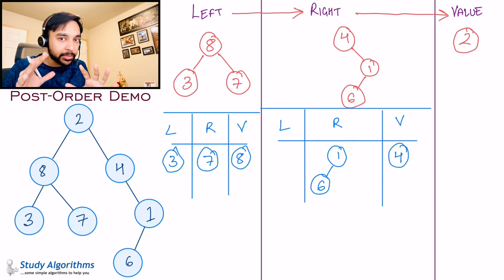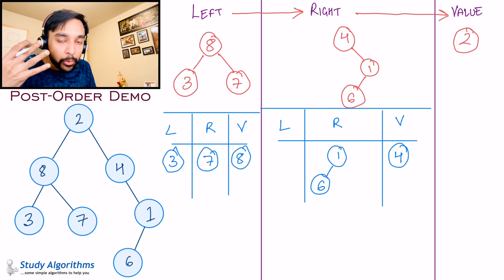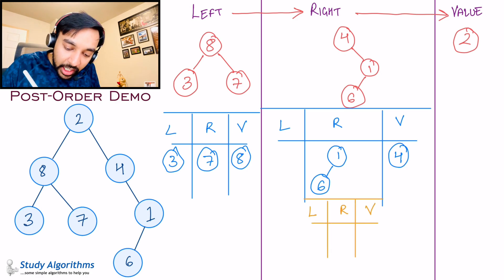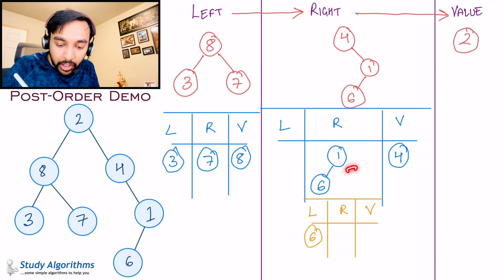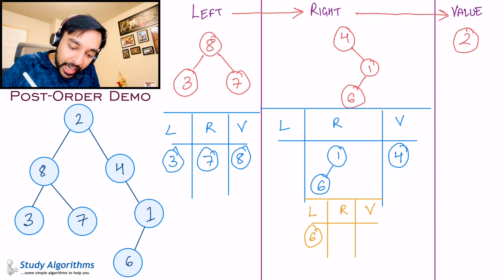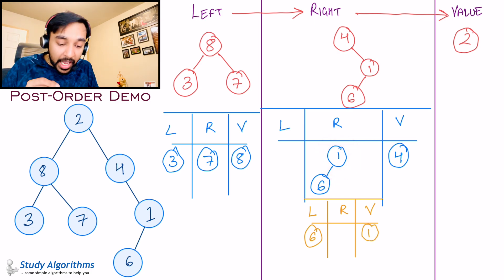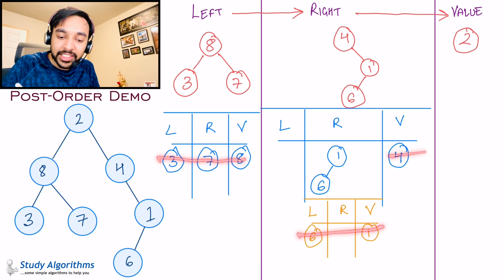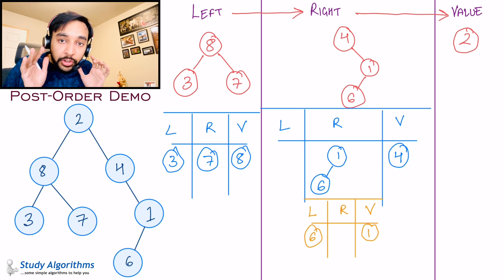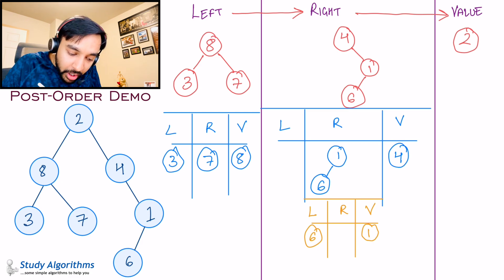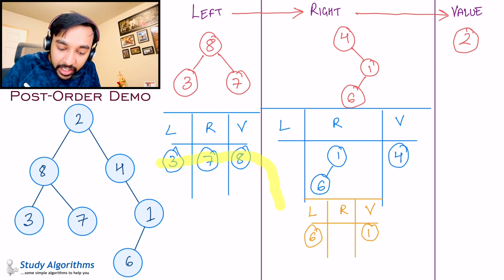For the right part, you still have a small tree, so we apply post-order traversal on it once more. On the left you have the value 6, so I write down 6. I don't have anything on the right, so I leave that column empty. And then I have the value 1, so I write down 1. Now all these nodes have reached a single value, so the post-order traversal of the complete tree is: 3, 7, 8, then 6, then 1, then 4, and then ultimately 2.